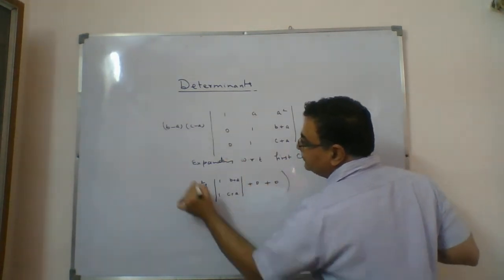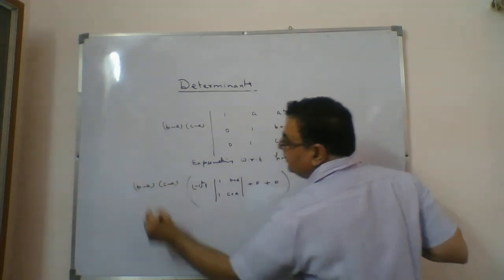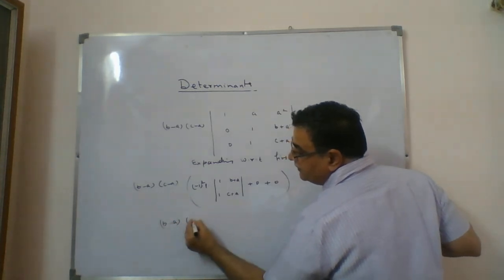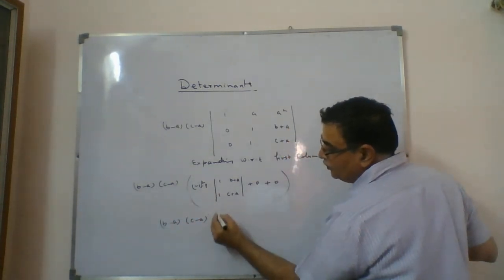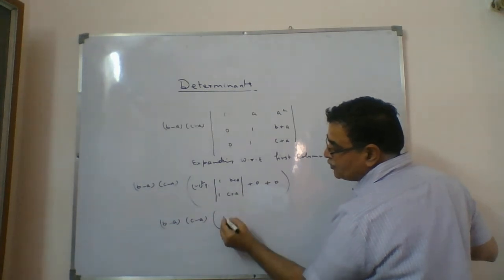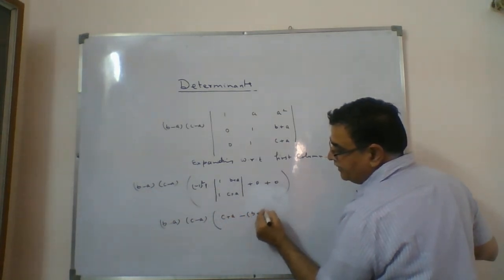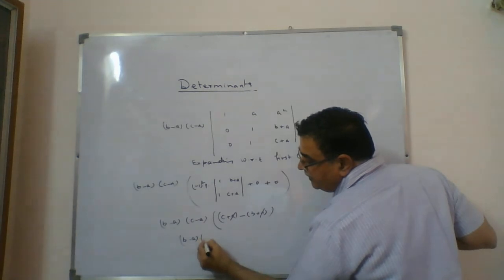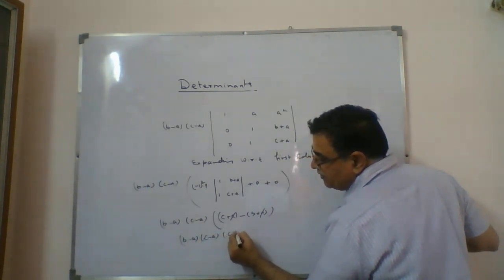Outside we have (b-a)(c-a). The 2×2 determinant gives (c+a) minus (b+a). The a's cancel out, leaving c minus b. So the result is (b-a)(c-a)(c-b).